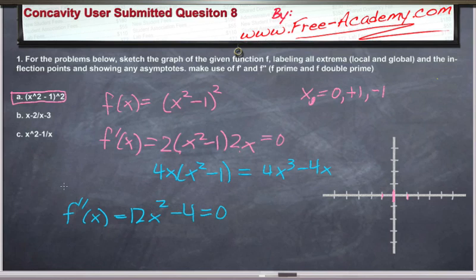So basically, wherever this is zero, we're going to have a straight line of some slope. Whereas in the first derivative, we have a horizontal line. Alright, 12x² - 4 equals zero. This is going to be x² is equal to one third. So x is equal to plus or minus the square root of one third.